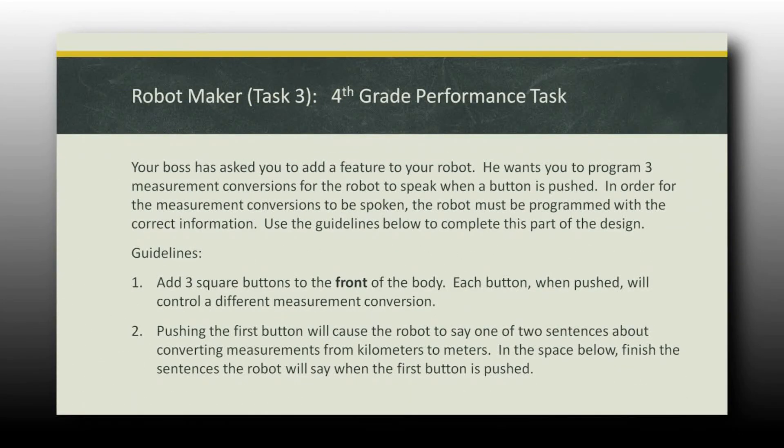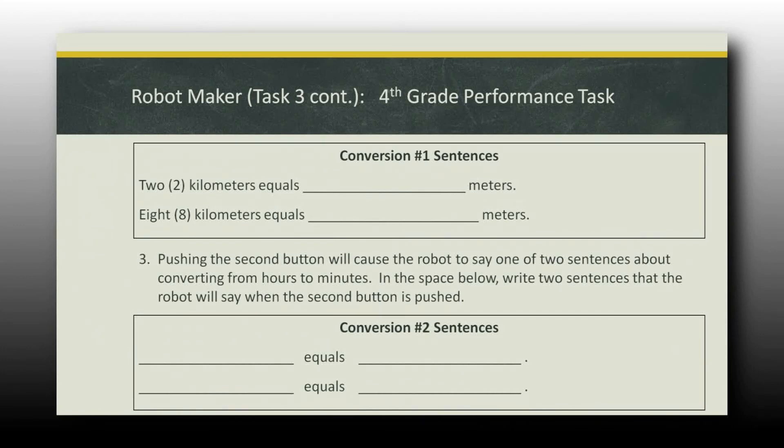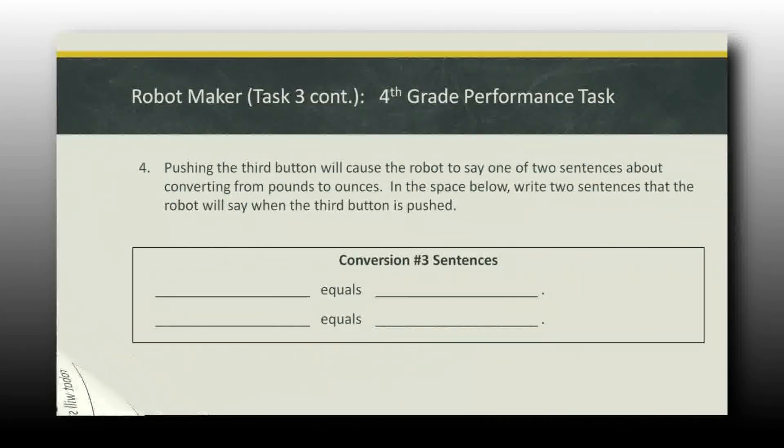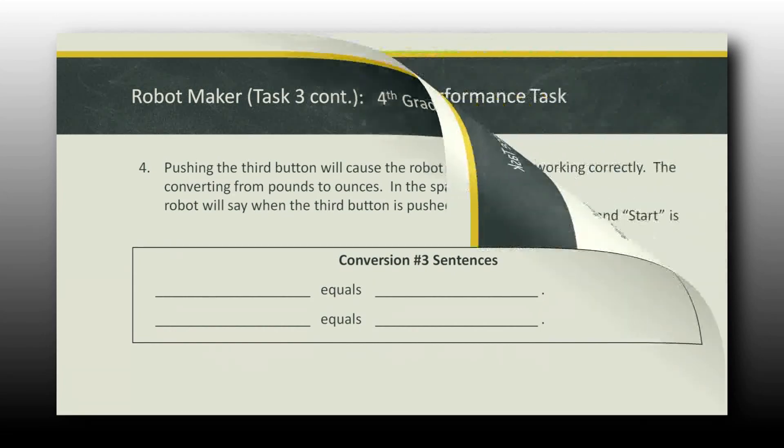Well, here's the next part. Your boss has asked you to add some features to your robot. You're going to program your robot. You're going to program them to do measurement conversions. So when you press a button, it speaks. So you're going to add three square buttons to the front of each. When each button's pushed, they'll control a different conversion. Pushing the first button will cause the robot to say one of two sentences that converts from kilometers to meters. So the first one, you push the button, it says 2 kilometers equals mmm. Now your kids have to know conversions in metric system. The next time, 8 kilometers equals mmm. Pushing the second button will cause your robot to say two sentences about converting from hours to minutes. So now you have to know hours to minutes conversions. And you get to decide what those are. Pushing the third button, you're going to convert from pounds to ounces. Again, kids have to have conversion skills.